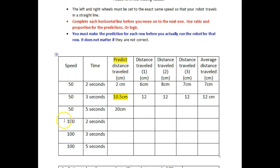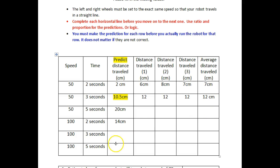After you've filled in that row, you are now going to run your robot at a speed of 100, going back to 2 seconds. Now, your prediction is easy. You went 7 centimeters going at a speed of 50 for 2 seconds. 100 is twice as fast as 50, so this prediction has to be 2 times that average distance travelled, and this prediction has to be 2 times that average distance travelled, and this prediction has to be 2 times that average distance travelled. It's just logic.